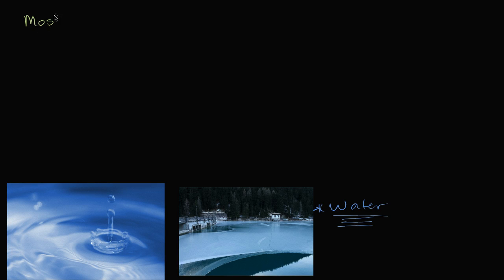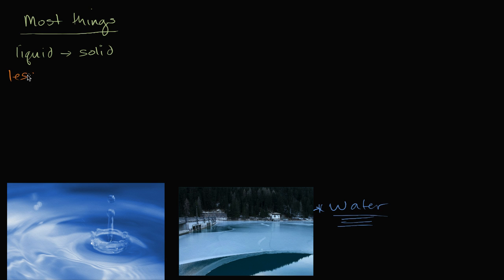If you look at most substances — most things — as we go from a liquid state, where things are literally fluid and the molecules are moving past each other, to a solid state where things are rigid or more rigid, you typically have something getting more dense. So the liquid state would be less dense and the solid state would be more dense. But let's think about what would happen if water were like most things.